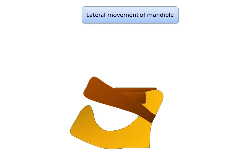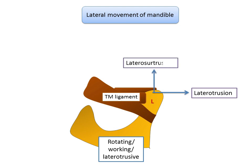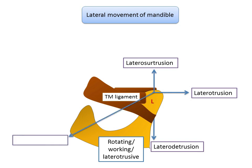The working side is limited by the temporomandibular ligament, which has an oblique portion and an inner portion. The oblique portion influences the normal opening movement of the mandible, whereas the inner portion prevents the lateral pterygoid muscles from overextension. Due to the action of the temporomandibular ligament, the working side can take only five different paths: lateral protrusion (moves laterally outward), lateral protrusion upward, lateral detrusion (laterally and downward), lateral protrusion forward, and lateral intrusion (laterally and backward).